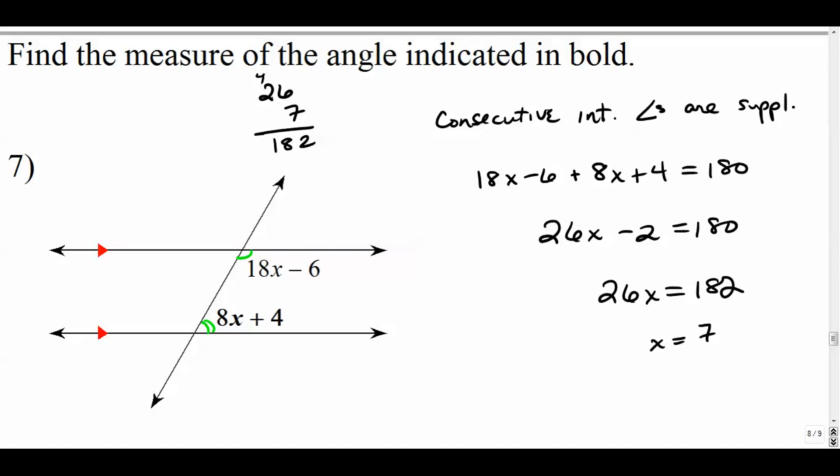But that's not what the question is asking, right? If you left it like that, you'd get the wrong answer because we need to actually find the measure of this bold angle, this bottom angle. So we're going to do 8 times 7, which is our x value that we just found, plus 4. That's 56. Plus 4 is 60 degrees.